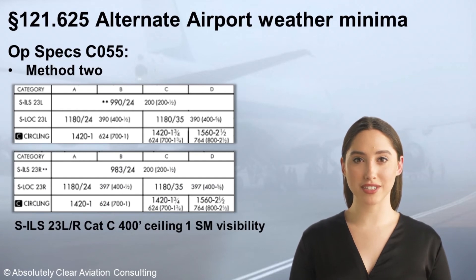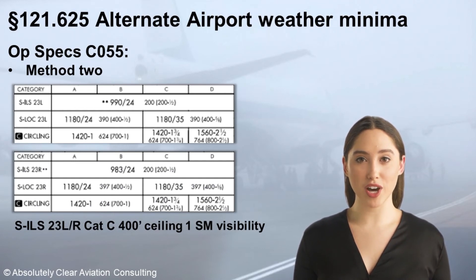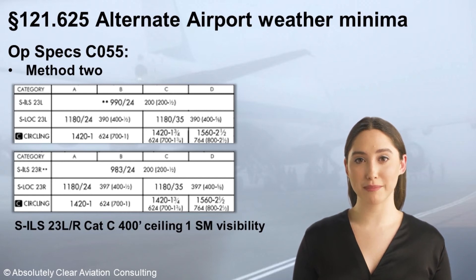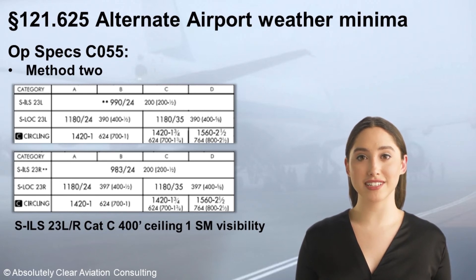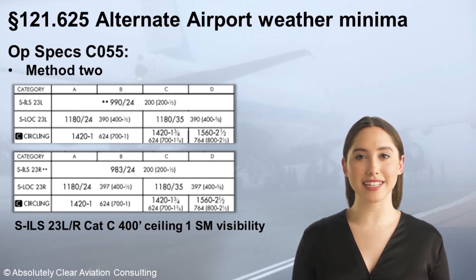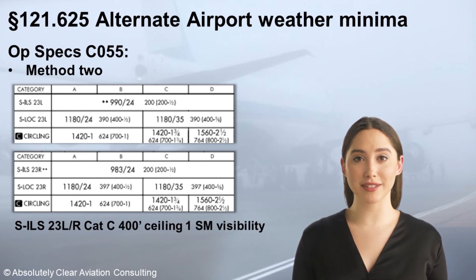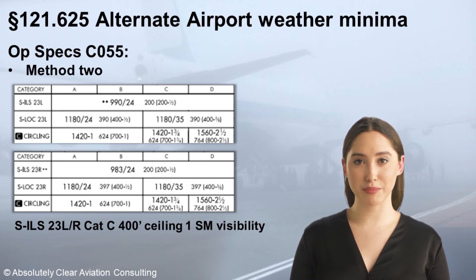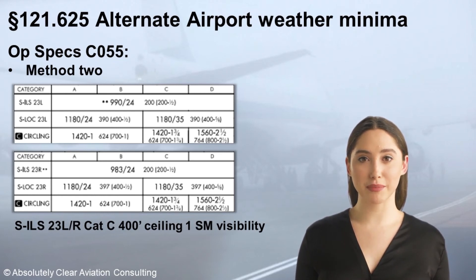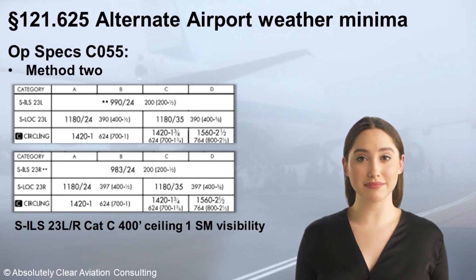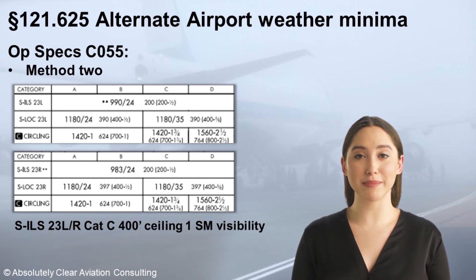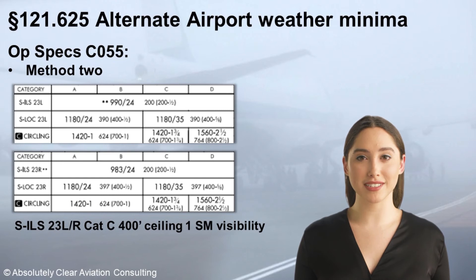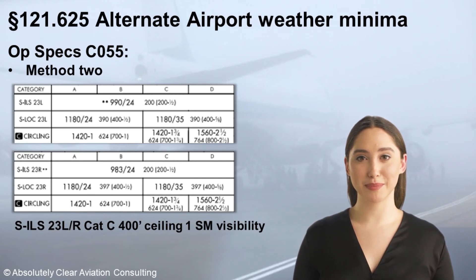Here's an example of a Method 2 calculation. The straight-in minimums for all approach speed categories of aircraft is a 200-foot decision height and 2400 RVR visibility for ILS approaches to runways 23 left and 23 right. Both approaches to separate runways are indeed separate functional navigational facilities, as evidenced by the different localizer identifiers, so Method 2 may be used. Method 2 only requires that 200 feet be added to the higher of the two approaches considered, and only ½ statute mile be added to the higher of the two approaches considered. Since the published decision height and visibility minimum is the same for both approaches, the resulting minimum ceiling is 400 feet, and the minimum visibility is 1 statute mile.